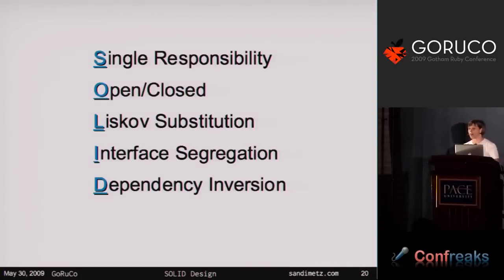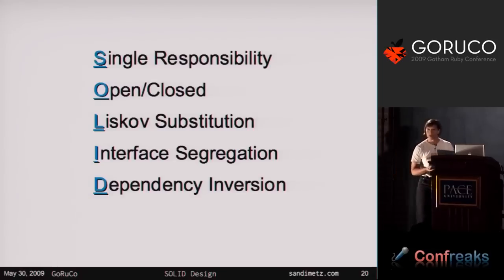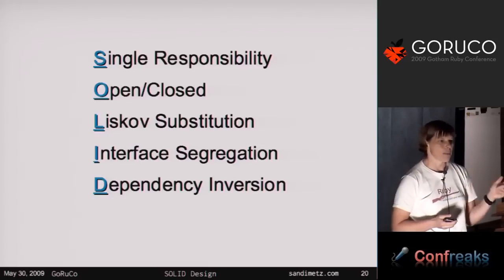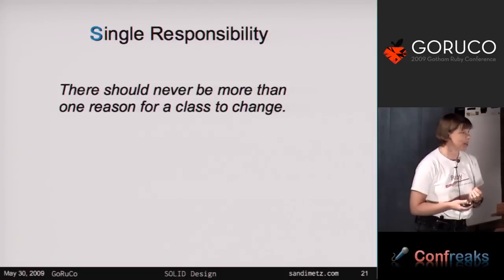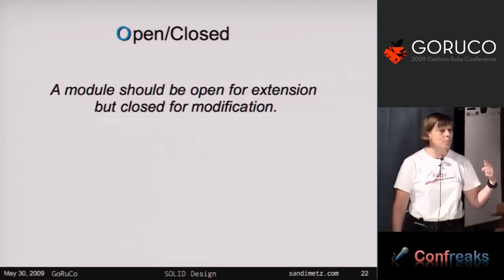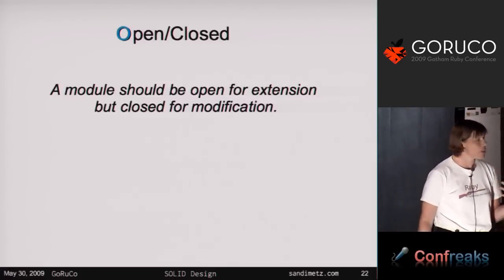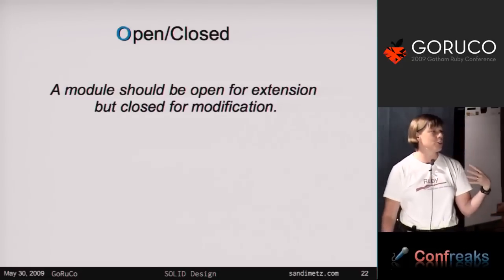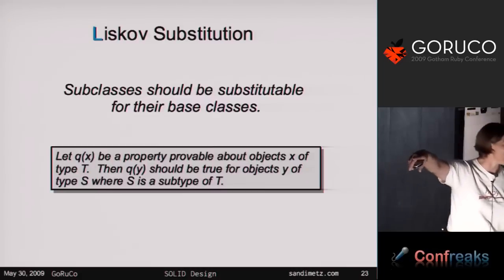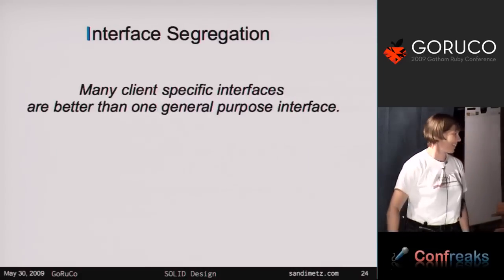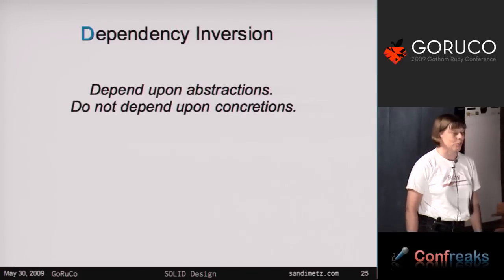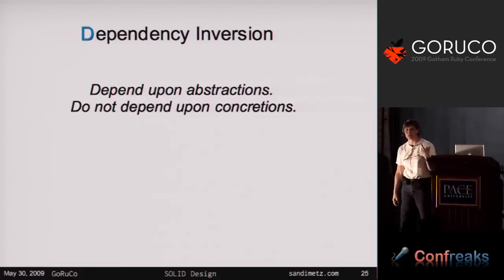Here are the five SOLID design principles. S is for Single Responsibility — there should never be more than one reason for a class to change. O is for Open/Closed — a module should be open for extension and closed for modification; you should be able to change it without actually changing it. L is for Liskov Substitution, which is about subclassing. I is for Interface Segregation — which seems like total gibberish, and I completely agree. And D is for Dependency Inversion — you should depend upon abstractions, not concretions.